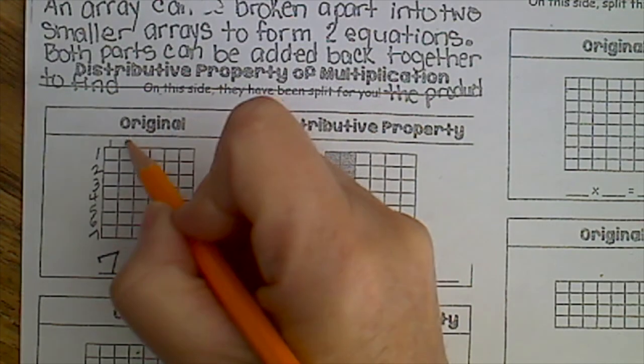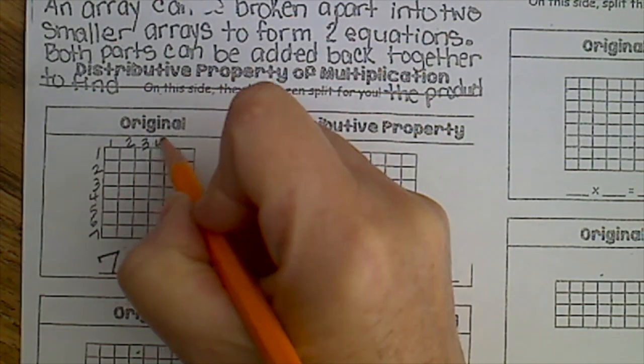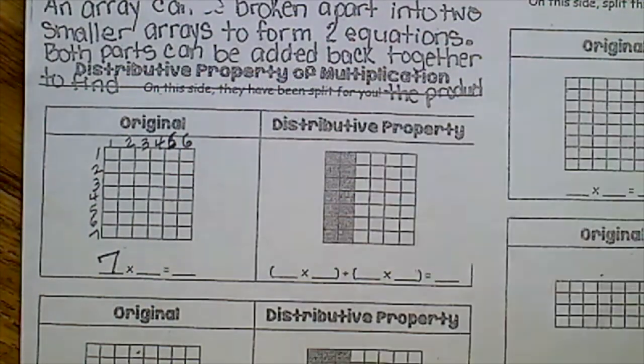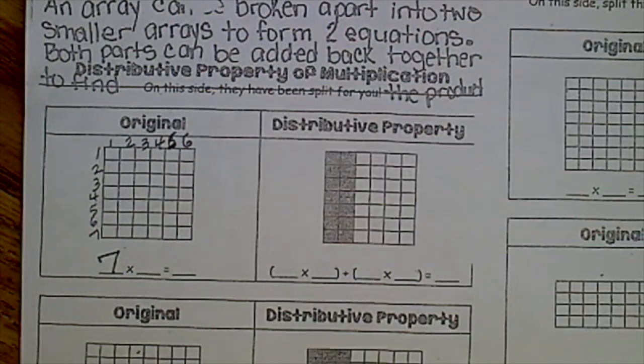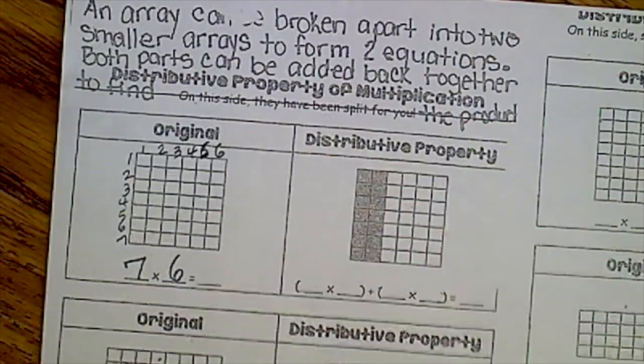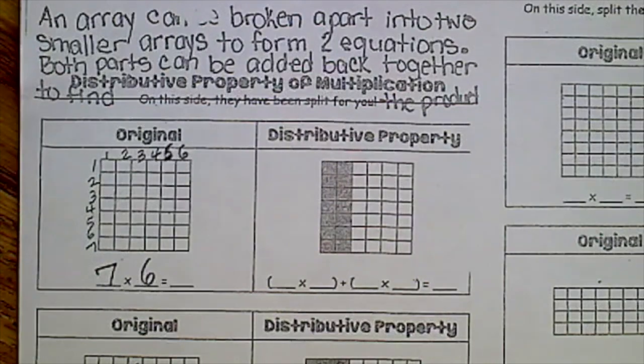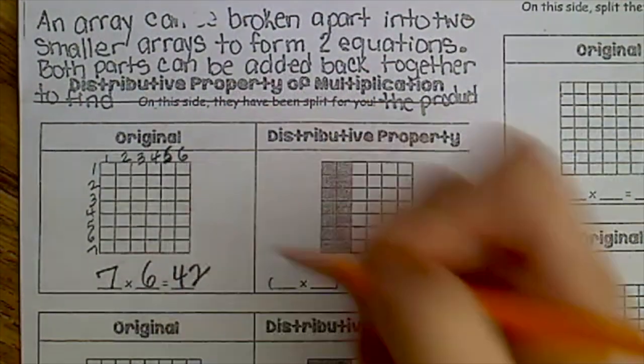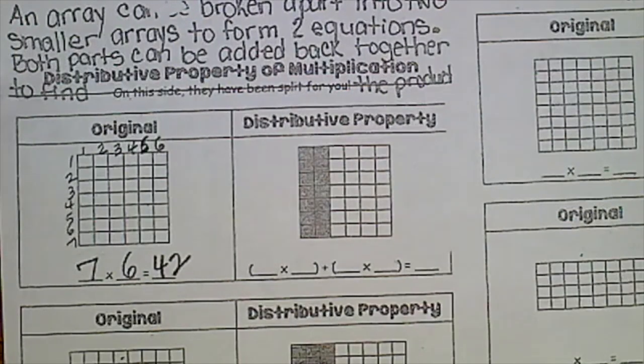Then you're going to count across how many columns there are. I thought it was also seven, it looked like it was seven, but it's actually only six columns. So the problem is seven times six. Now some of you might know the answer to that is 42.